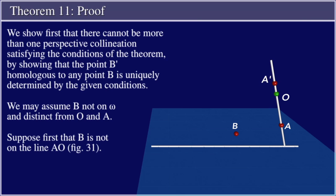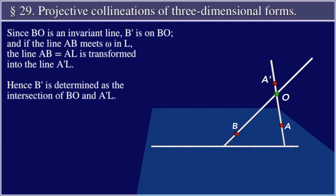Suppose first that B is not on the line AO, figure 31. Since BO is an invariant line, B prime is on BO, and if the line AB meets omega in L, the line AB equals AL is transformed into the line A prime L. Hence, B prime is determined as the intersection of BO and A prime L.